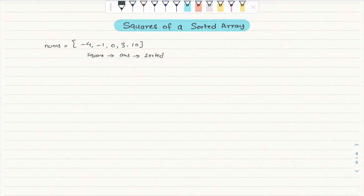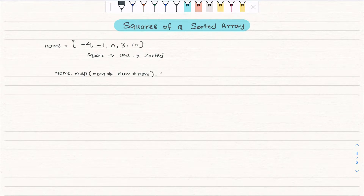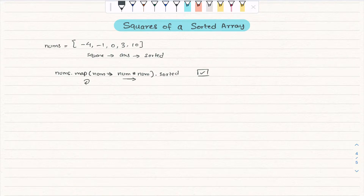For the first try, that's pretty simple — we can just say nums.map each number, let's call it num, and say num multiplied by num to take the square, then sort the result. We iterate each number, square them, and sort at the end. That will for sure give the correct answer, but its complexity is O(n log n).